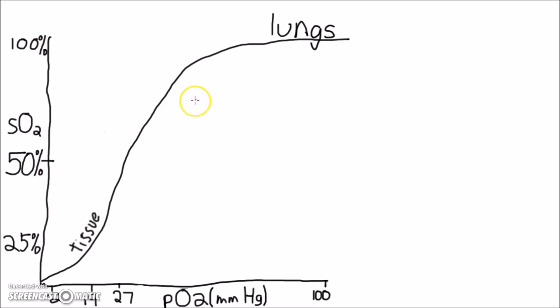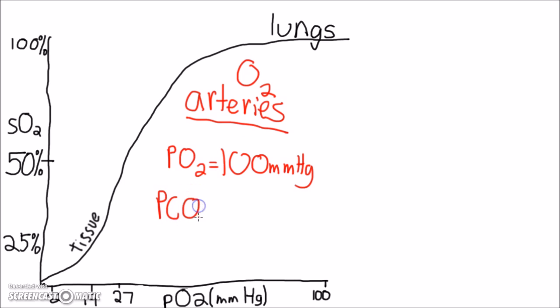Before we begin, here are important numbers to remember about the normal, healthy individual. Systemic arteries appear red because they have a large amount of oxygenated hemoglobin. That is, PO2 equals 100 mmHg, and PCO2 will be at its lowest in the body at 40 mmHg.